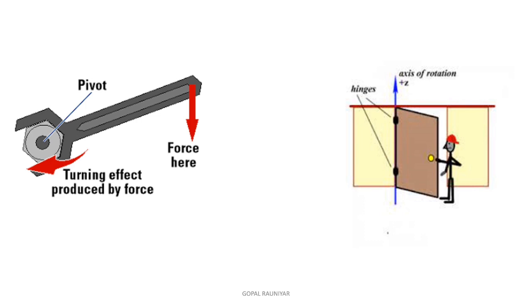Now we will understand turning effect of force from daily life examples. The door is fixed with hinges. These hinges act as the pivoted point, and the door rotates when we open or close it — it rotates around this fixed point or hinge, which is the pivoted point. This is the axis of rotation, which we will study more about in class 9. When we apply force on the door, the body rotates about the pivoted point.